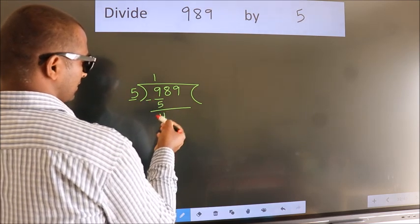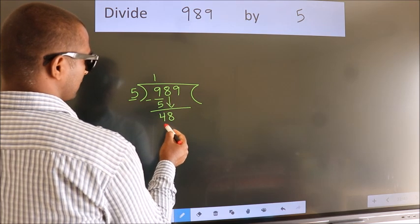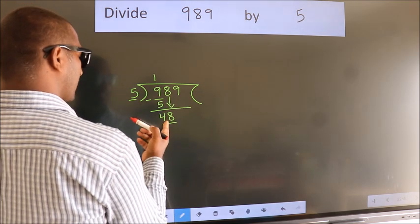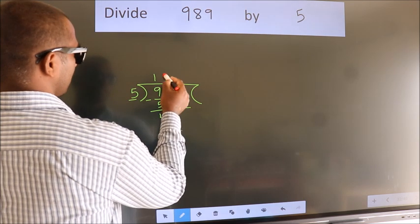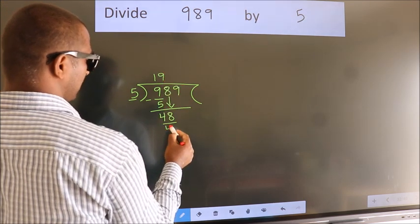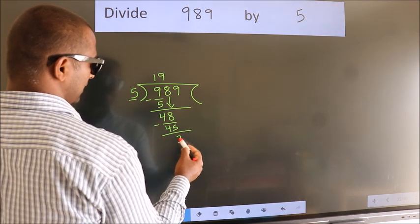After this, bring down the beside number. So 8 down, so 48. A number close to 48 in 5 table is 5 nines 45. Now we subtract. We get 3.